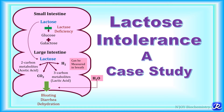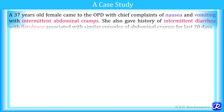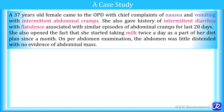In this video, we are going to discuss a case study on lactose intolerance. A 37-year-old female came to the OPD with chief complaints of nausea and vomiting with intermittent abdominal cramps. She also gave history of intermittent diarrhea and flatulence associated with similar episodes of abdominal cramps for the last 20 days. She also mentioned that she started taking milk twice a day as part of her diet plan since a month. On per abdomen examination, the abdomen was little distended with no evidence of abdominal mass.